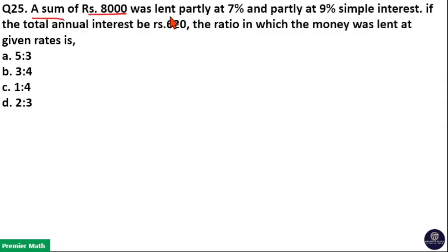A sum of Rs.8000 was lent partly at 7% and partly at 9% simple interest. If total annual interest be Rs.620, the ratio in which money was lent at given rates is. Here we use allegation method.